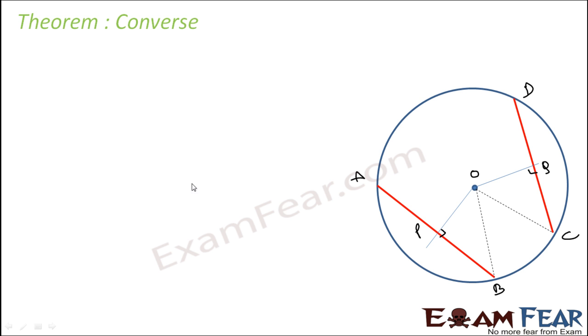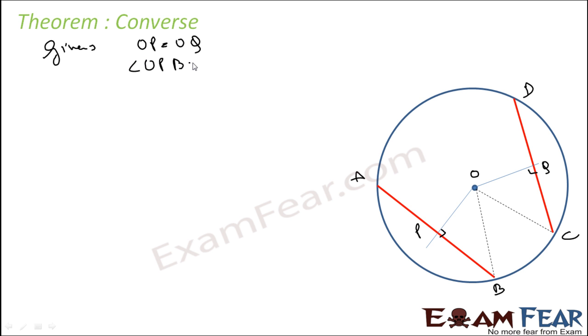What is given? Given: OP is equal to OQ, and angle OPB is equal to angle OQC, both equal to 90 degrees.